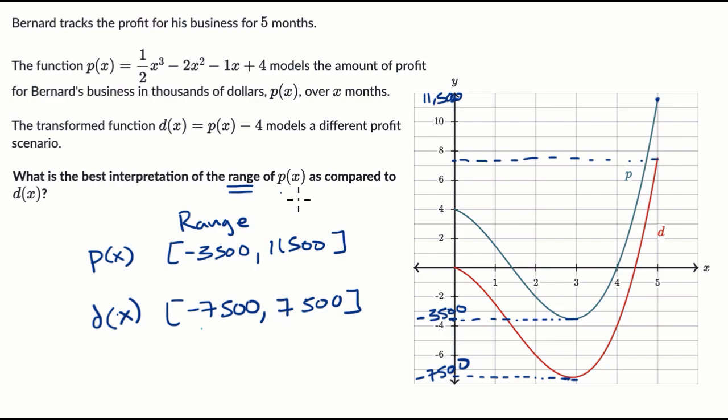So the best interpretation of the range of p(x) compared to d(x), you could say, well, the range gets shifted down by $4,000. The low point is 4,000 less. That's when the business had a negative profit. And then the high point is $4,000 less as well.